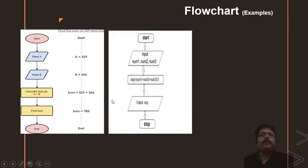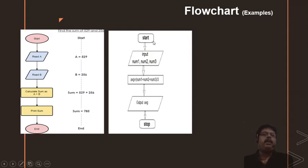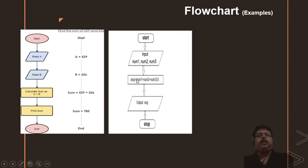Next, we will see one more example. Here, we input three numbers. Start and stop are given — sometimes the shapes may be designed in different software with slightly different appearances. We input three numbers in one parallelogram. Then we calculate the average in a rectangle, and we print the average in a parallelogram.